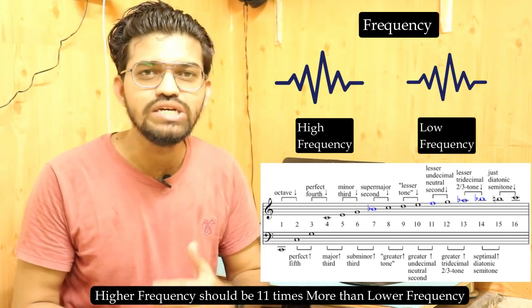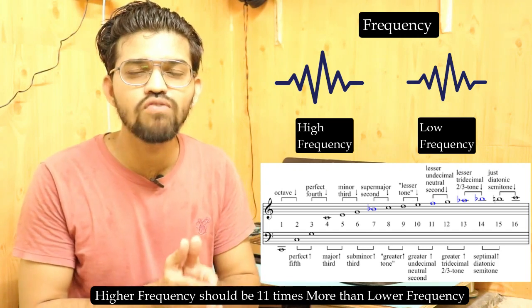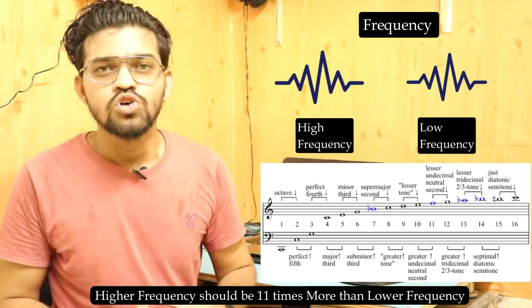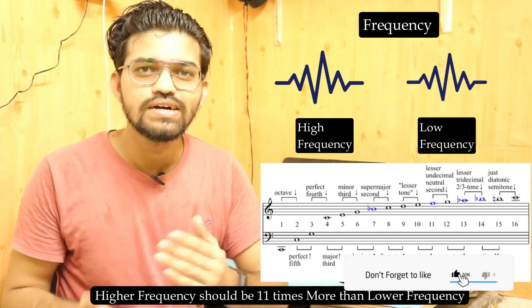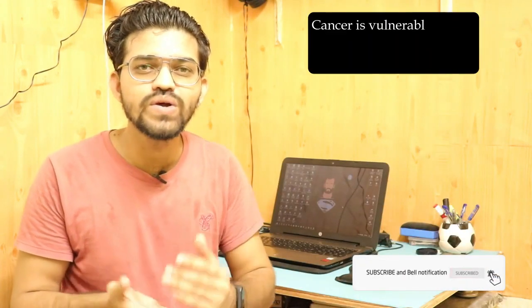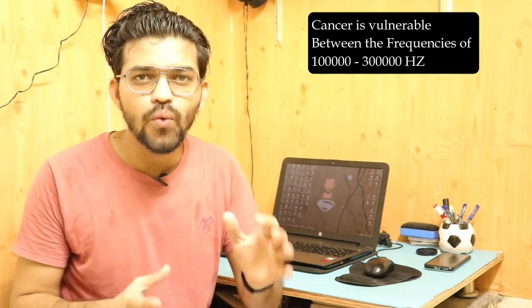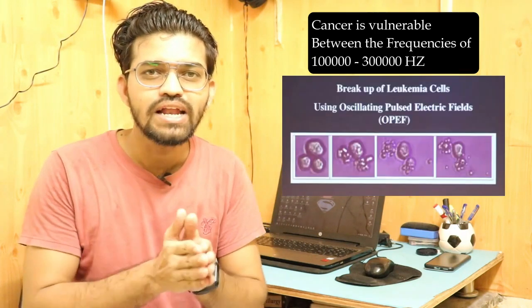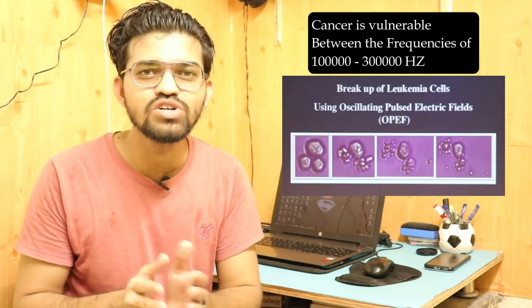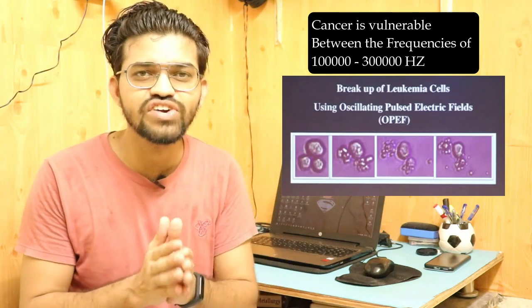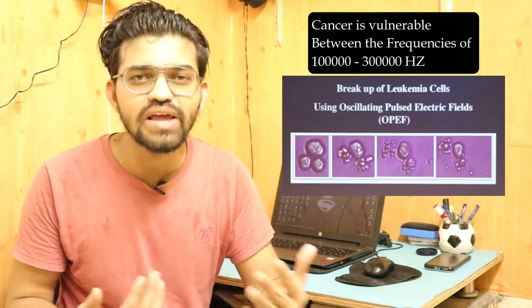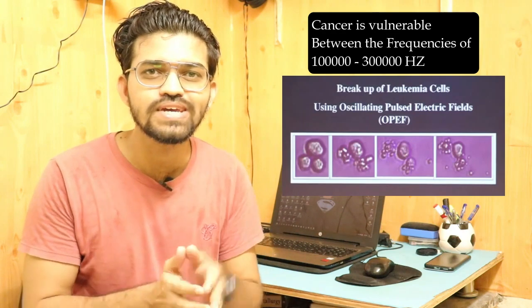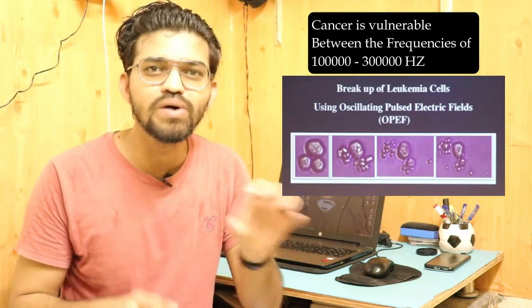Some microorganisms can be easily shattered using these electronic signals. After further research, scientists found that cancer cells are vulnerable between frequencies of 100,000 Hz to 300,000 Hz. Leukemia cells shatter very easily in this range — their growth is restricted and cell multiplication and duplication processes are inhibited at these two particular frequencies.